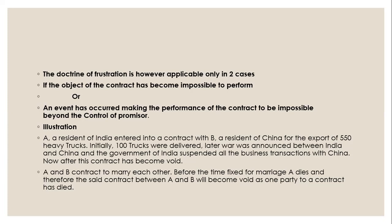To illustrate: A, a resident of India, enters into a contract with B, a resident of China, for the export of 550 heavy trucks. Initially 100 trucks were delivered. Later, war was announced between India and China, and the government of India suspended all business transactions with China. The contract therefore becomes void. In another example, A and B contract to marry each other. Before the time fixed for marriage, A dies, and therefore the contract between A and B becomes void as one party has died.